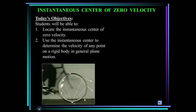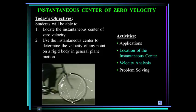Today's objectives: you will be able to locate the instantaneous center of zero velocity, and you will be able to use the instantaneous center to determine the velocity of any point on a rigid body in general plane motion. Activities include some applications, how to locate the instantaneous center of zero velocity, a velocity analysis, and then we'll do some problem solving.